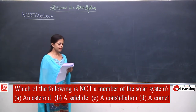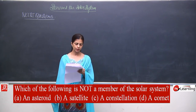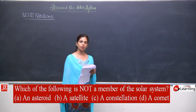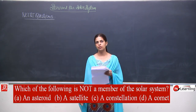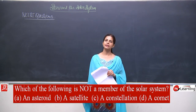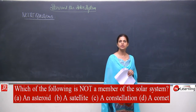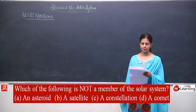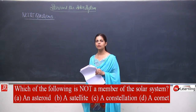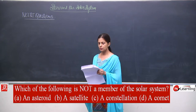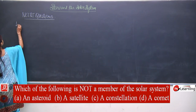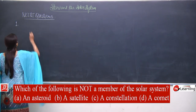The options are: A — asteroid, B — satellite. Asteroid is obviously part of the solar system. Satellites are also part of the solar system. C — constellation, and stars: these are not in the category of the solar system. D — comet, but comets are also part of the solar system. So the correct answer for question number 1 is a constellation.